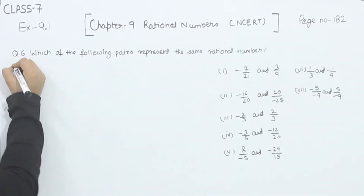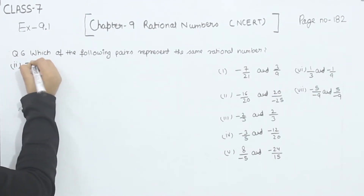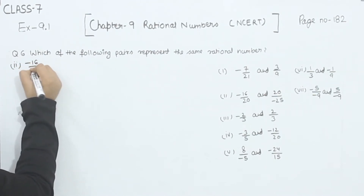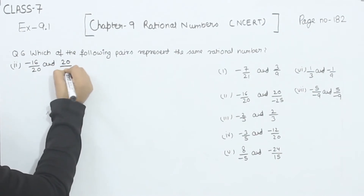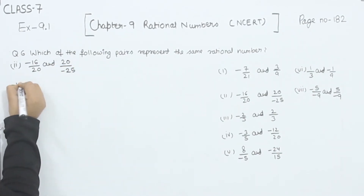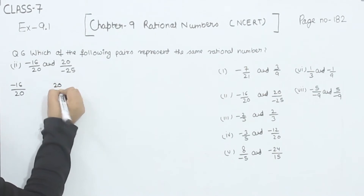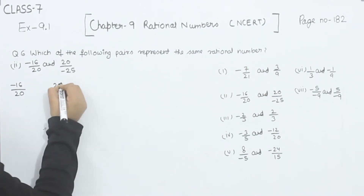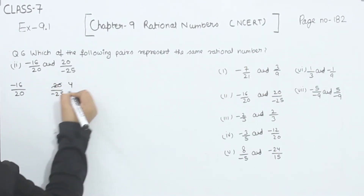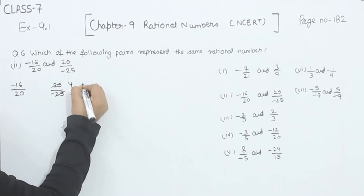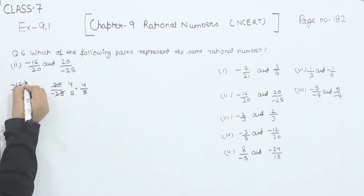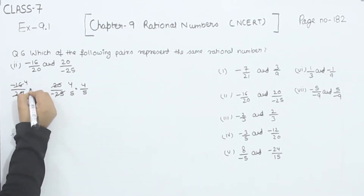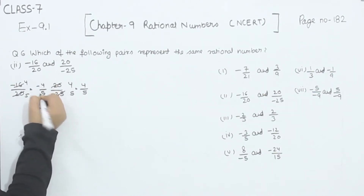Now comes part 2. We have minus 16 by 20 and 20 by minus 25. We are going to take them to the simplest form. For 20 by minus 25: 5 fours are 20, 5 fives are 25, so this is 4 by minus 5. For minus 16 by 20: 4 fours are 16, 4 fives are 20, so this is minus 4 by 5.